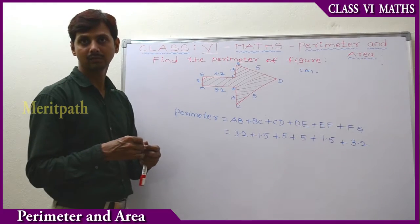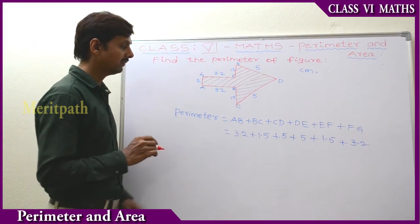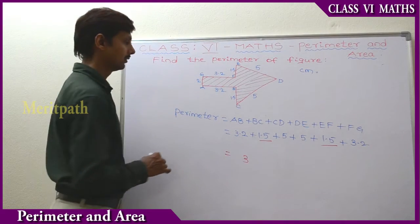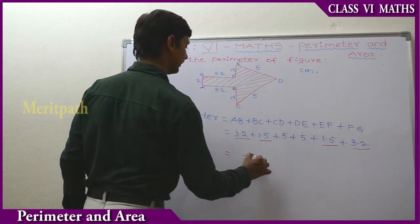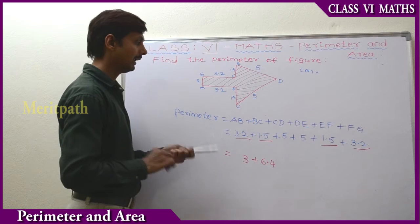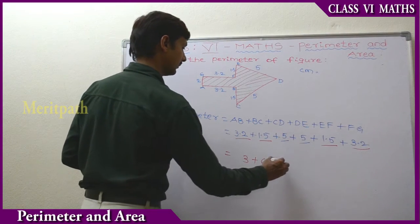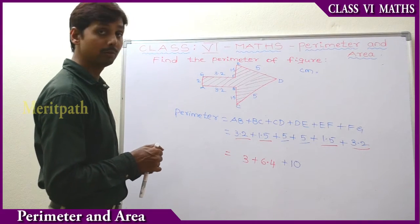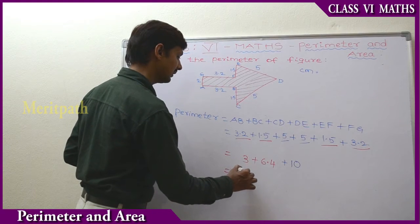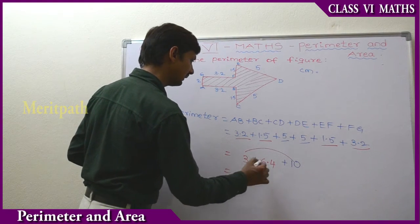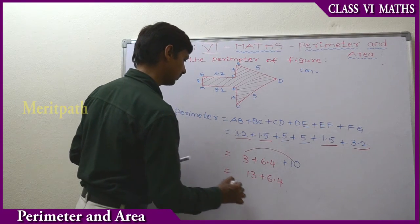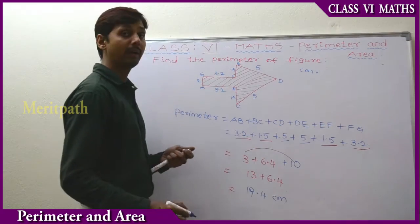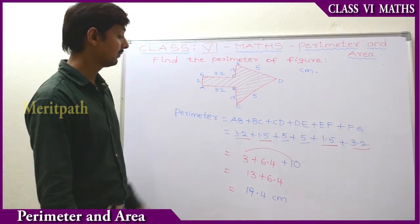So let's add all these numerical values. We have 1.5 + 1.5 = 3 cm, and 3.2 + 3.2 = 6.4 cm. And the remaining value is 10. So let's add these groups: 10 + 3 + 6.4 = 19.4 cm. So the perimeter of this figure is 19.4 centimetres.